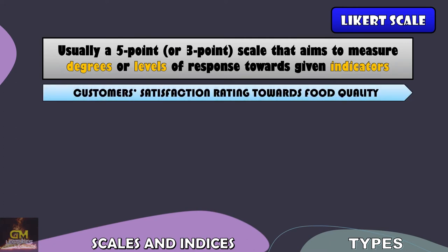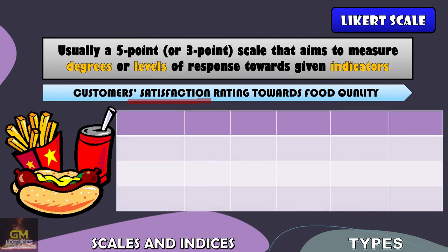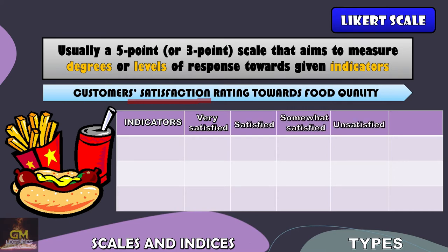For example, we have the customer satisfaction rating towards food quality. Satisfaction is something that is qualitative, hence we cannot actually measure it using numbers. As such, we have different terms to measure the satisfaction rating, such as very satisfied, satisfied, somewhat satisfied, unsatisfied, and the lowest would be very unsatisfied. Depending on the indicators, the respondents would then give their answers depending on their experience.